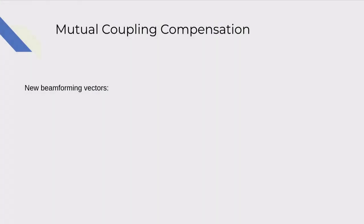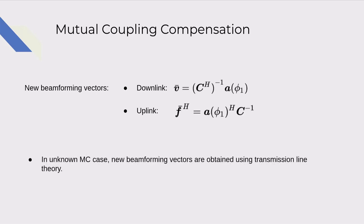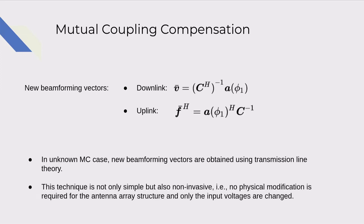In the case of known mutual coupling by estimation technique, the mutual coupling is compensated by matrix inversion. New beamforming vectors are found as shown. In the unknown mutual coupling case, new beamforming vectors are obtained using transmission line theory. This technique is not only simple but also non-invasive, in other words, no physical modification is required for the antenna array structure, and only the input voltages are changed.